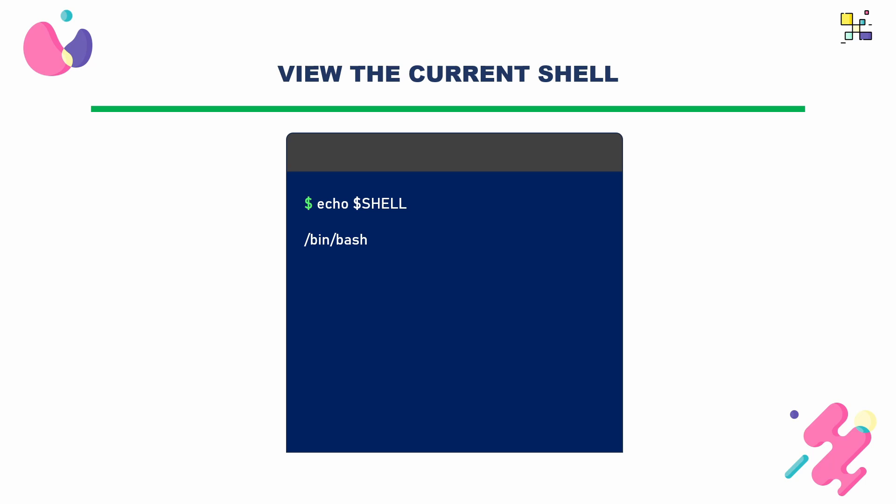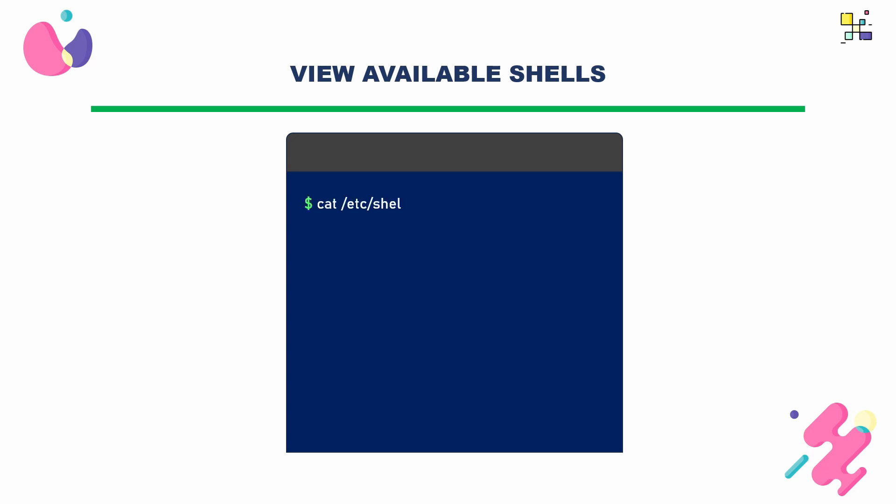If you want to change the current shell, you first need to know how to check the shells that are available on your system. To check the available shells, run the command: cat /etc/shells. The output will display the list of available shells, each one on a separate line.